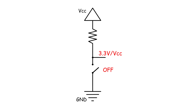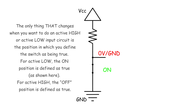If we move this switch into the closed position, then the output is connected to ground, and is therefore true for an active low circuit. So remember that the only thing that changes on your switch circuit when you have an active high or active low input is where you define the switch's true position to be. You do not need to construct a separate switch circuit for active high and active low input signals.